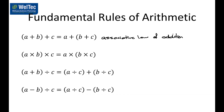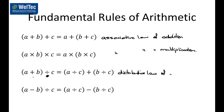We can also have the associative law of multiplication — we can predetermine what is multiplying by what using brackets. We can also distribute division over addition, where division is outside and addition is inside — that's the distributive law of division over addition. Similarly, we can distribute division over subtraction.